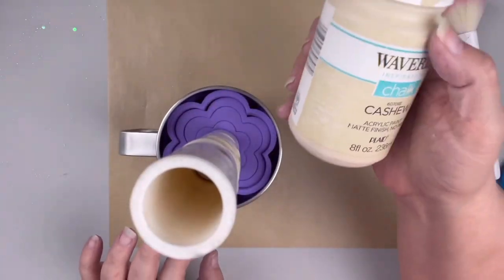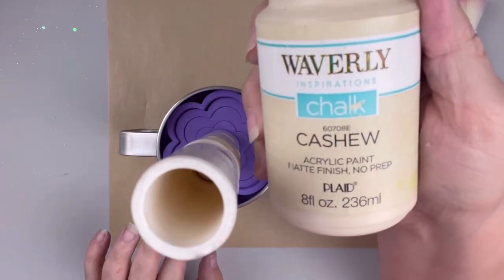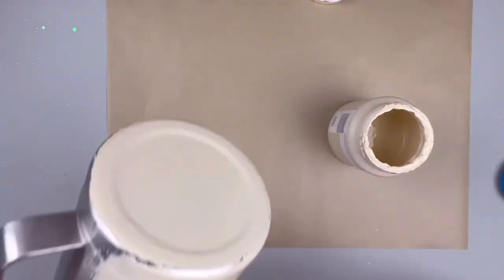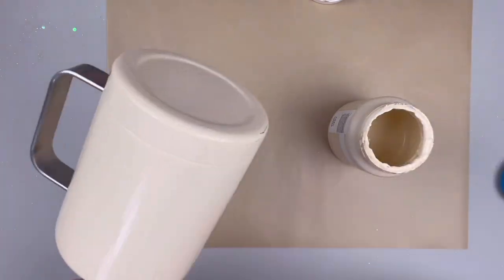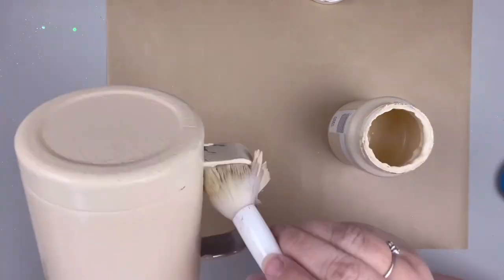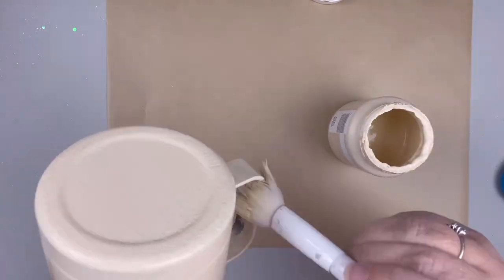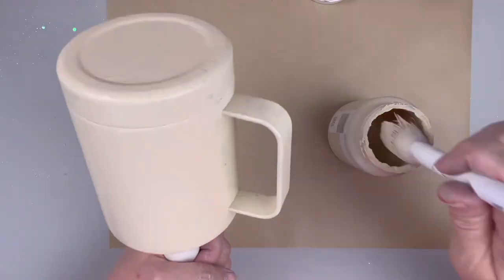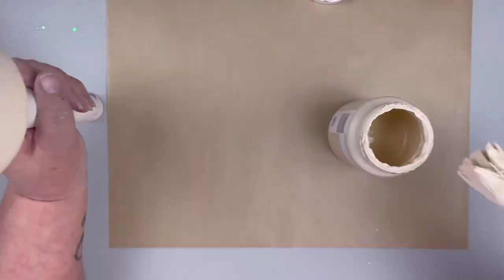And I'm going to then paint it. I'm making a donut tumbler or mug. So I'm going to use Cashew by Warily chalk paint. I thought this was the perfect color to be kind of like the donut color. So I'm going to give this two coats of paint and then let that dry.